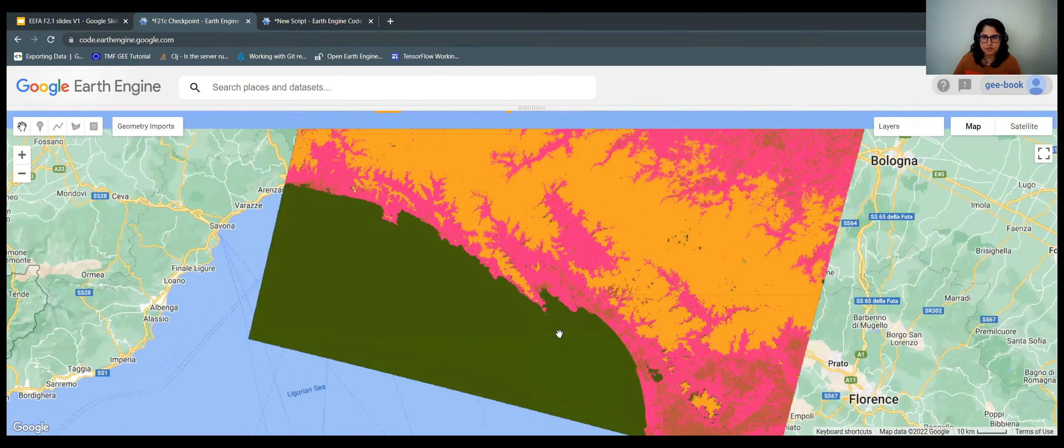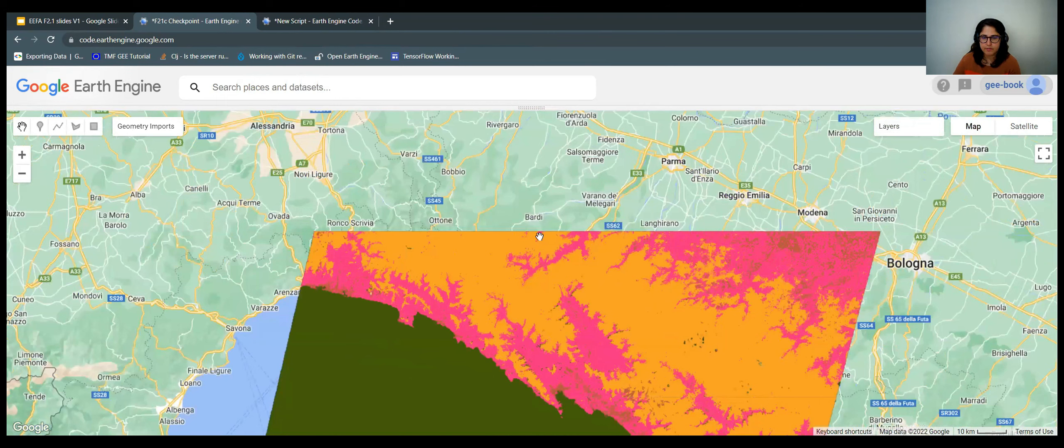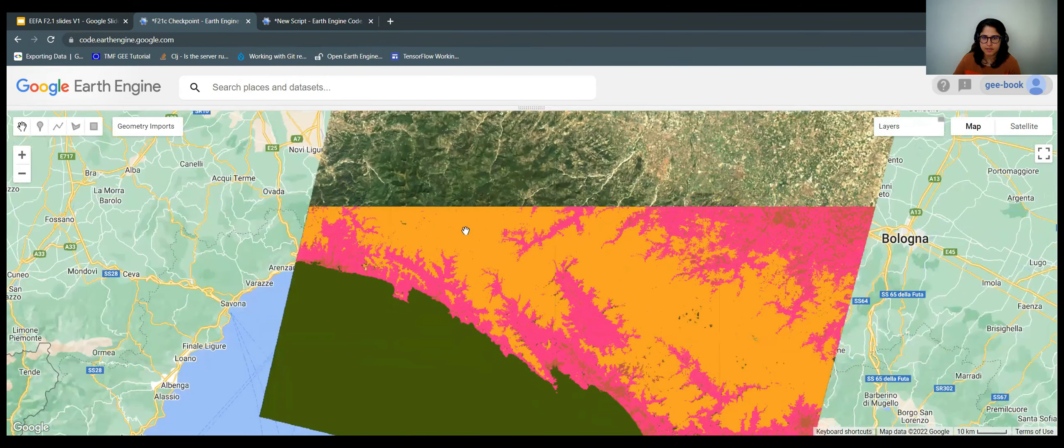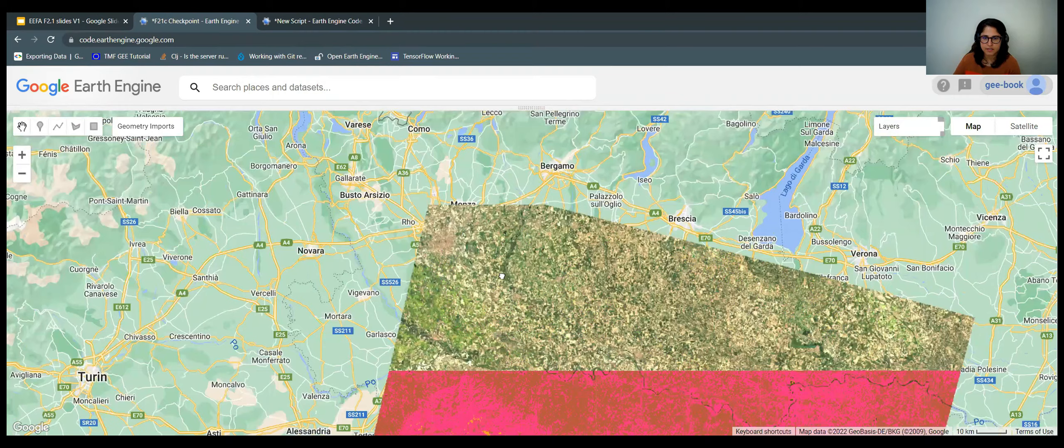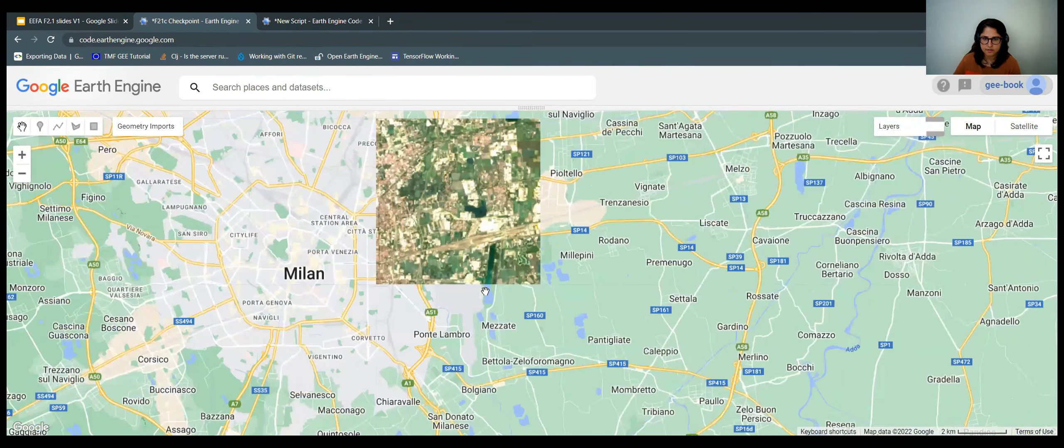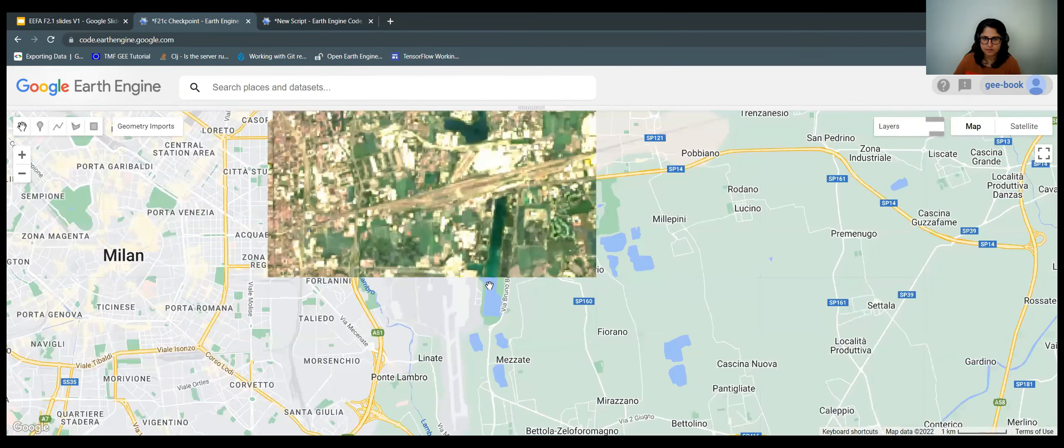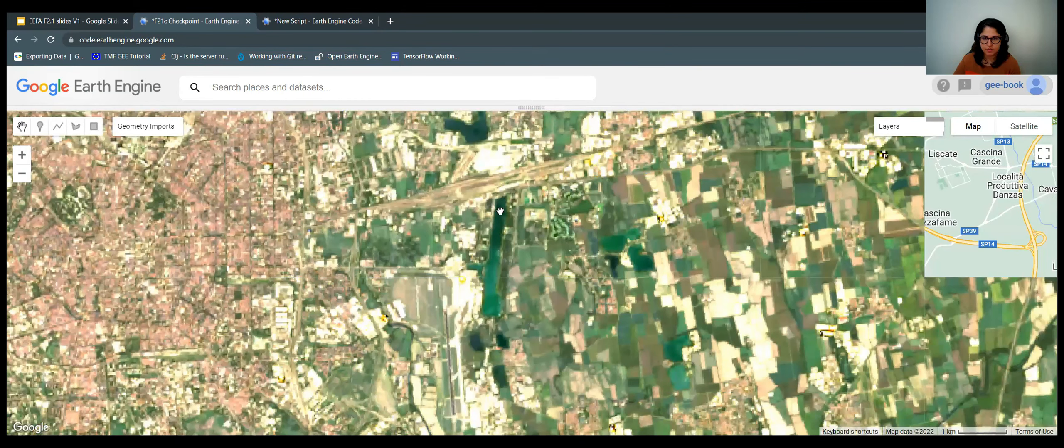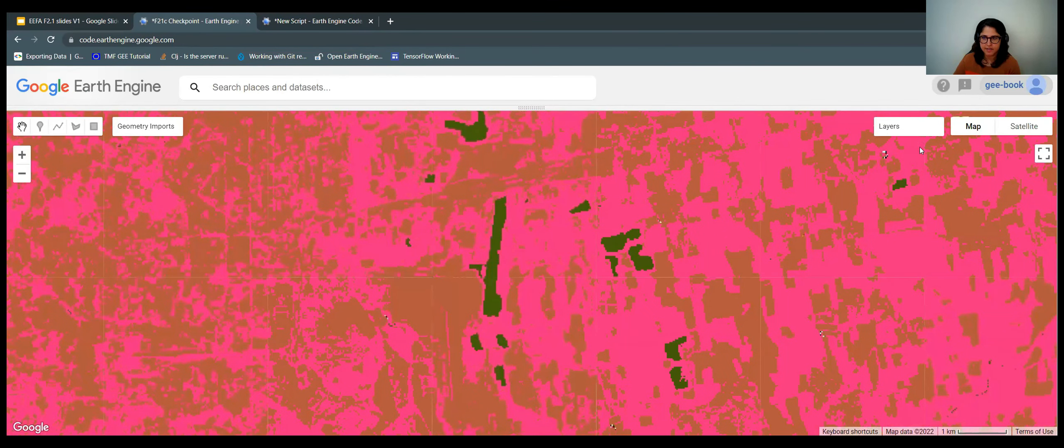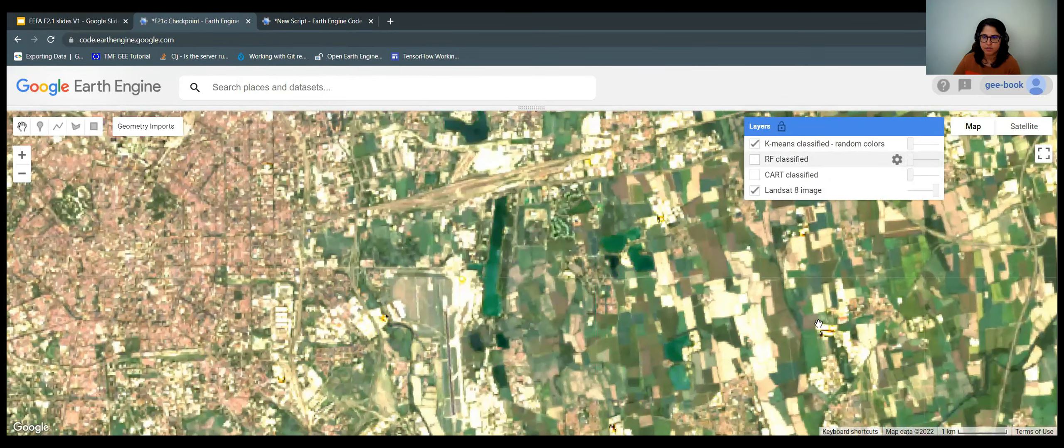Let me turn this off. Let me see if those water bodies that we saw here close to the building are being classified correctly. It seems they are. Yeah, so it's also doing a good job here, classifying these water bodies that we have seen. These reservoirs or something.